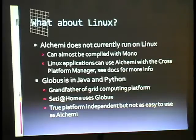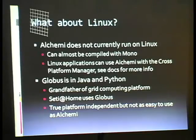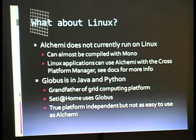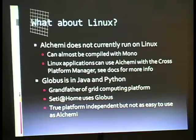That's where grid computing came from — the Globus organization or Globus project. SETI@Home uses Globus, Folding@Home uses Globus. Any big grid application out there — you might not even know those were grid applications — but any cross-platform scientific application uses Globus. It's truly platform independent but not as easy to use as Alchemy. Alchemy is more built for someone who just wants to set up a grid to play around. Unless you're in the scientific community, then you should use Globus.